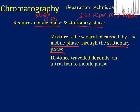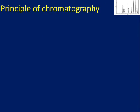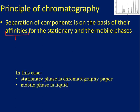The distance traveled depends on how much the component likes the mobile phase. If it likes the mobile phase a lot, it'll travel a very long way; if it doesn't like it, it'll only go a short distance. The principle — and you absolutely must know this — is that separation of components is on the basis of their affinities for the stationary and mobile phases. Affinity just means how much they like it. High affinity for the stationary phase means you barely move; high affinity for the mobile phase means you travel very far.